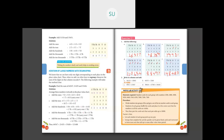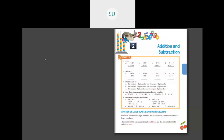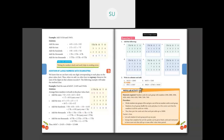For homework, write the remaining problems in columns as shown and then add them. Do this in your notebook. Also do the questions on page 101 — question 4 and 5. The next class we will continue with the next topic. Thank you students.